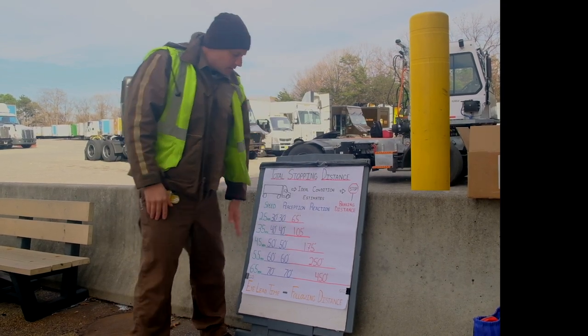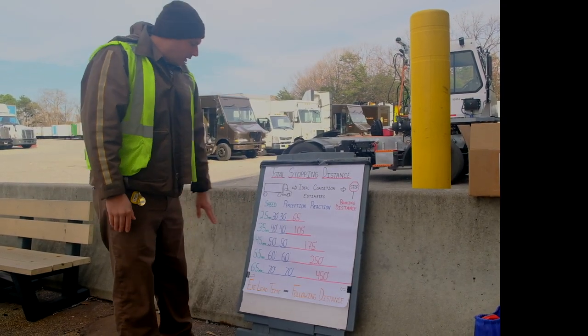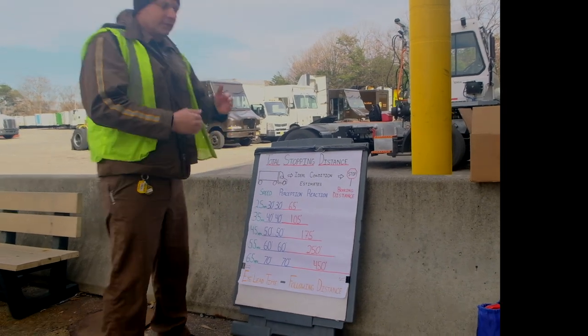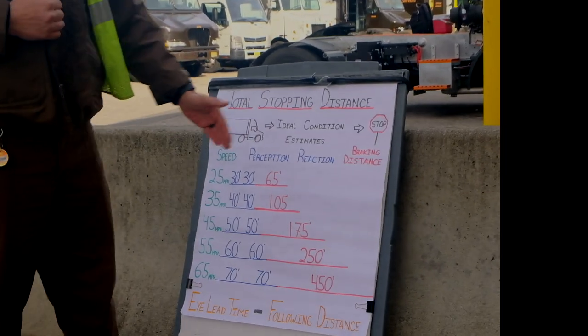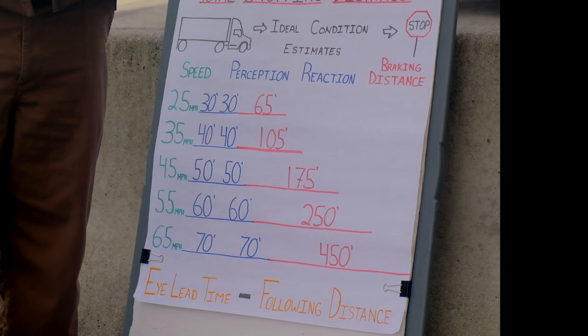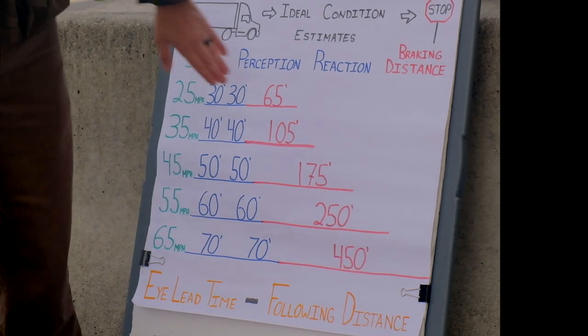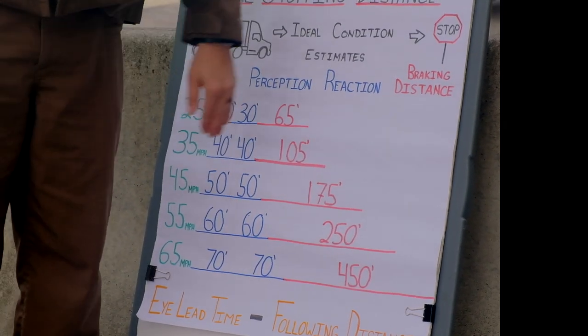These can change. Two key methods to follow are eye lead time — make sure you're looking down the road — and your following distance, maintaining that space in front of you, so you have more distance and time to stop.